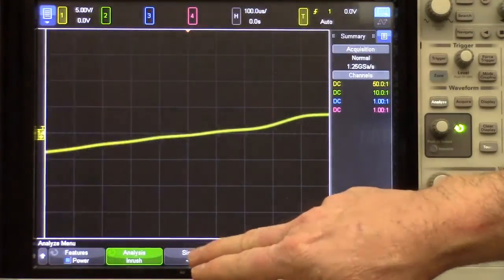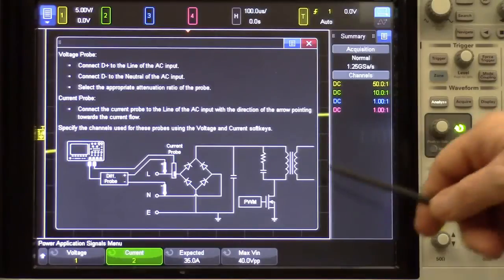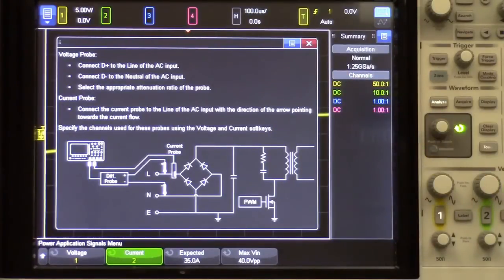Next step is go into the Signals menu. In this menu, we can see a diagram very similar to what I showed earlier, and it gives you some helpful hints on how to connect your voltage and current probes, which I've already done.